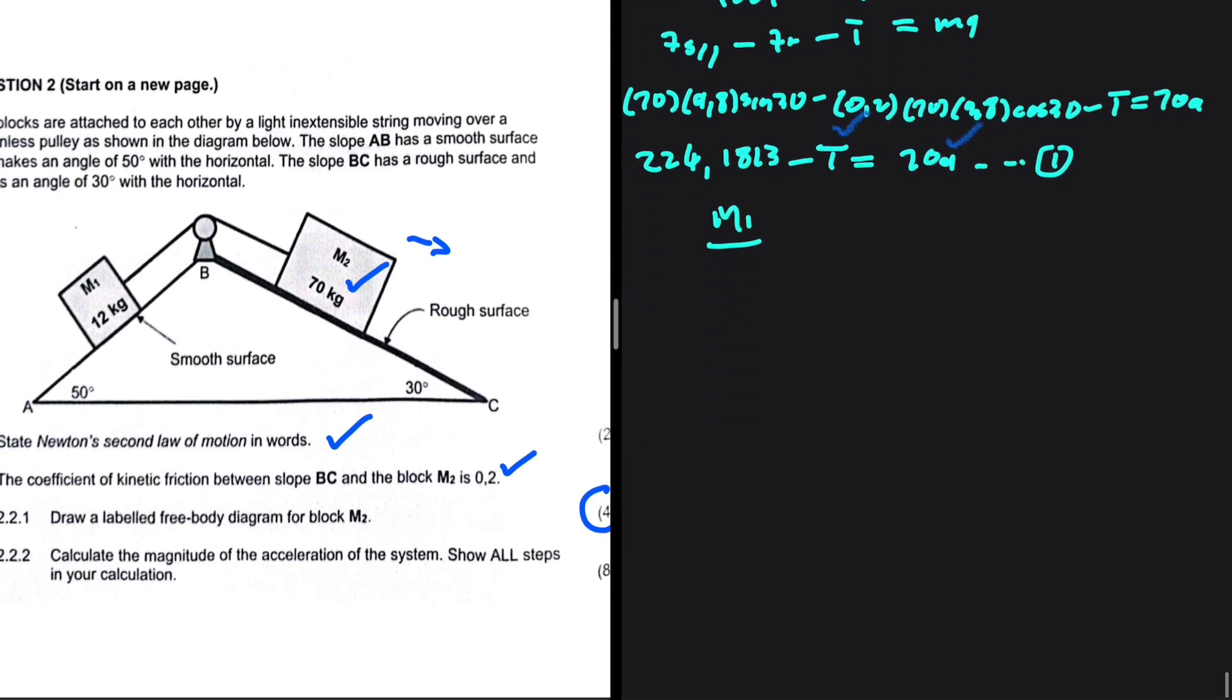Let's do a free body diagram for M1. We have the weight, obviously. We have the tension which is pulling it up the incline. We have the normal force. M1 is experiencing no frictional force. So we can leave it like that.